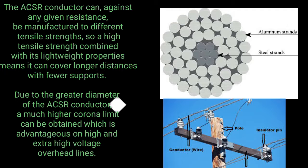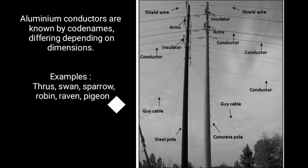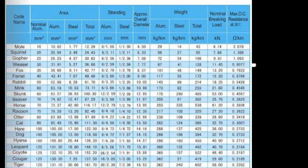Aluminium conductors are known by many different names depending on their dimensions. Examples include: Thrush, Swan, Spiral, Robin, Raven, Menson, and many more.